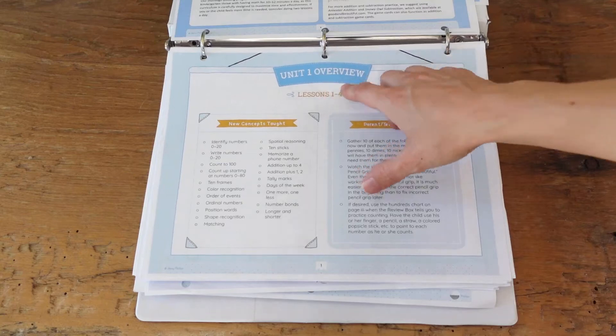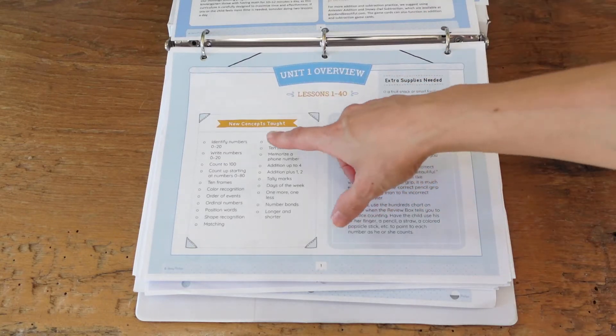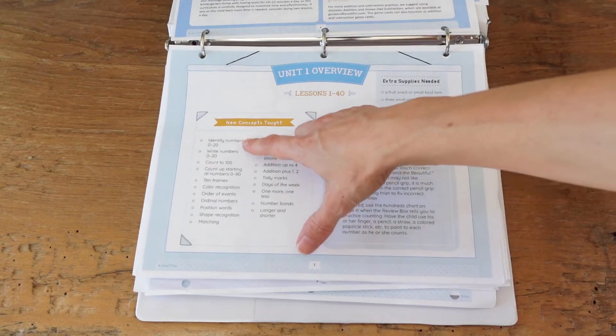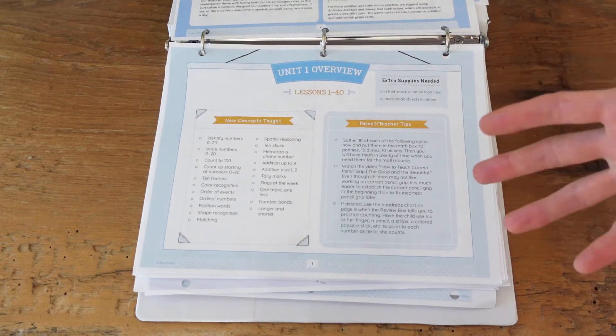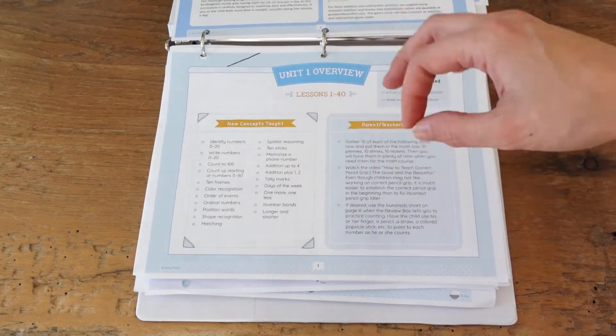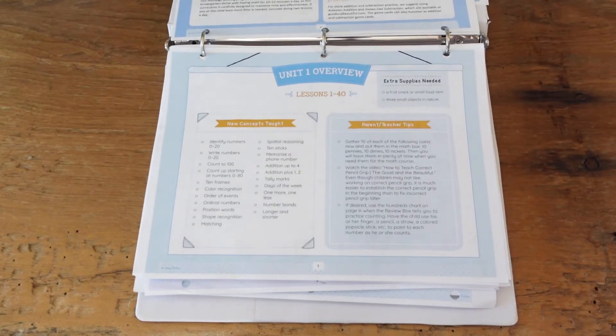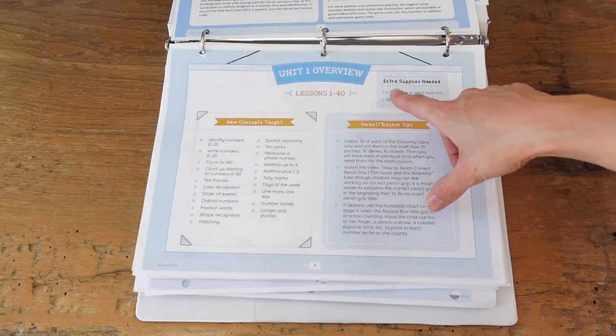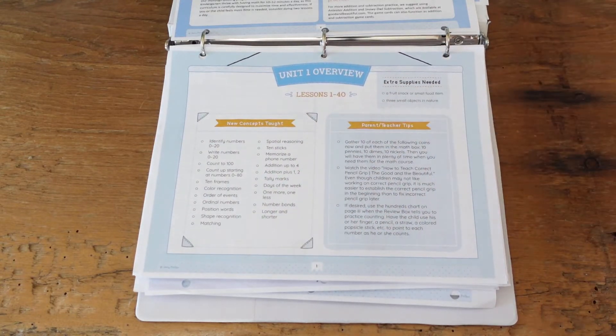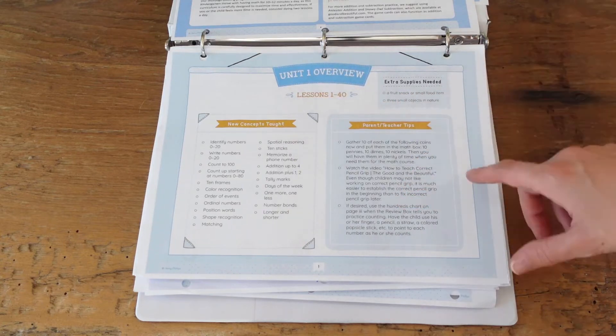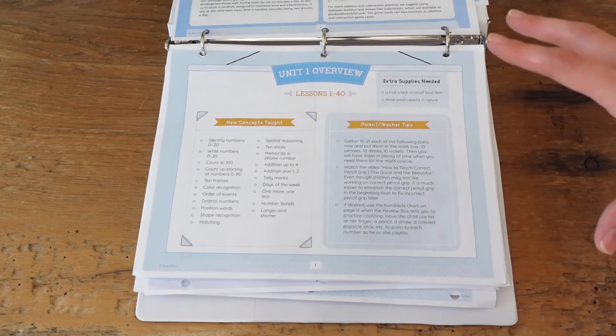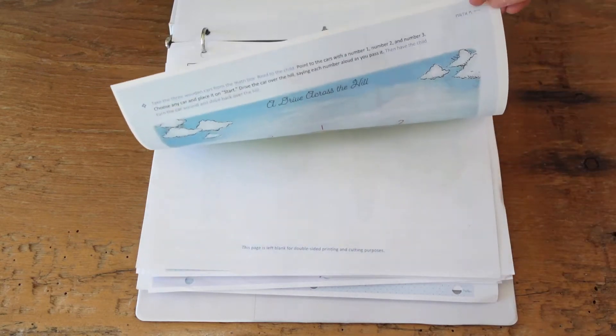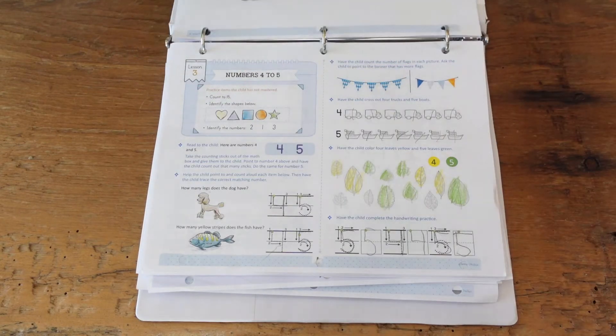I love how this curriculum has a complete unit overview for every unit. It gives you an idea of the new concepts that are going to be taught per unit. In the first unit you're going to be identifying numbers 0 through 20. This is why I mentioned in the beginning of the video that ideally we could pick up at Lesson 25 because that's what she's ready for after her CLE program. But she does love doing all the busy work so we are starting at the very beginning. It's going to have a section here to gather up the extra supplies which is a fruit snack or some small food item and then three small objects in nature for the unit one overview. She did already complete the first couple of lessons here and has thoroughly been loving it.